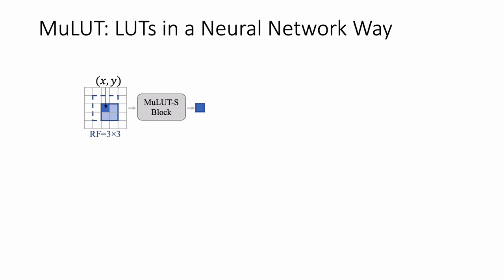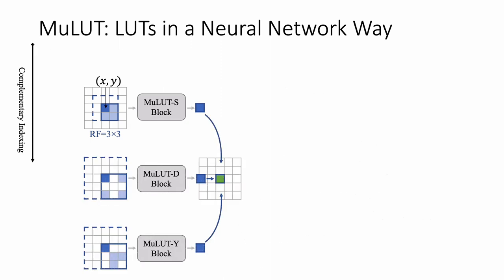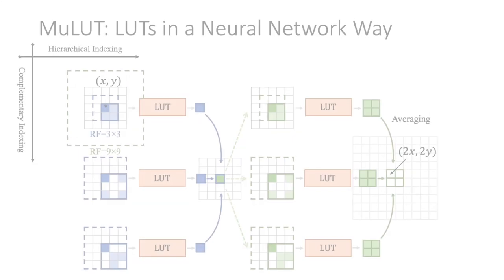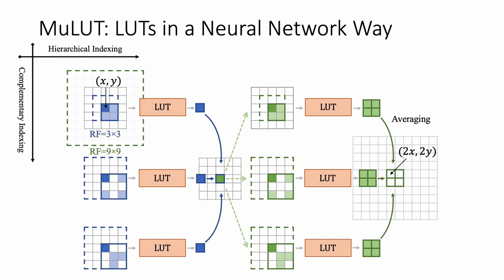By parallelizing and cascading these MuLUT blocks, the receptive field and modeling capacity of the MuLUT networks increase, while the total size of cached LUTs grows linearly instead of exponentially. The MuLUT network, composed of MuLUT blocks, is trained in an end-to-end manner. After caching the trained MuLUT network, MuLUT shares exactly the same structure.